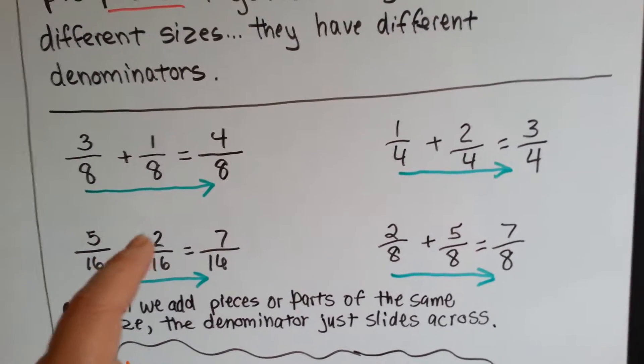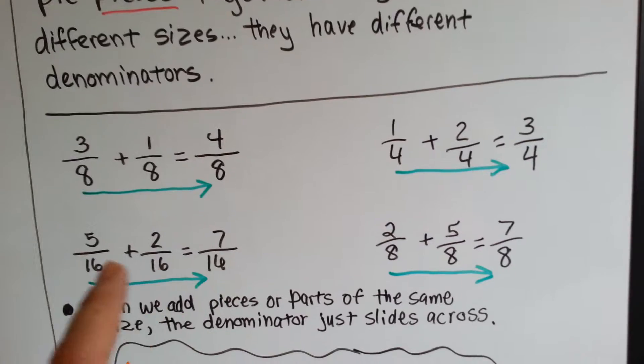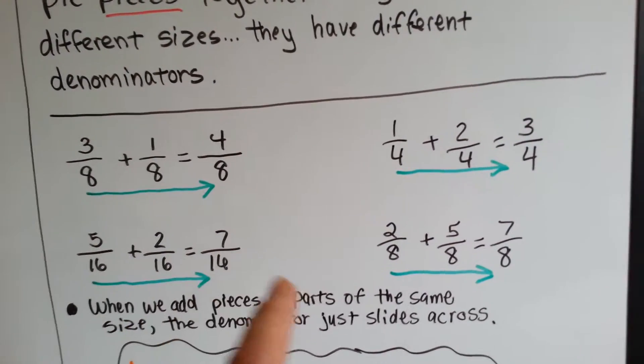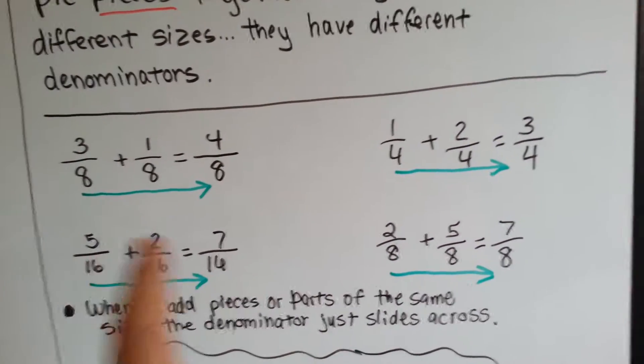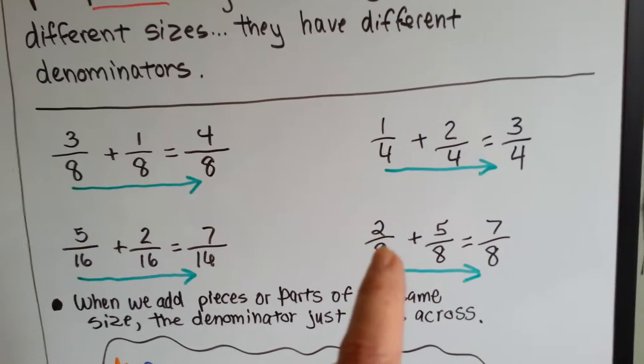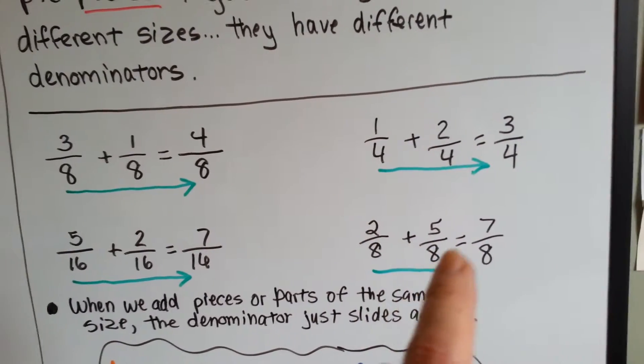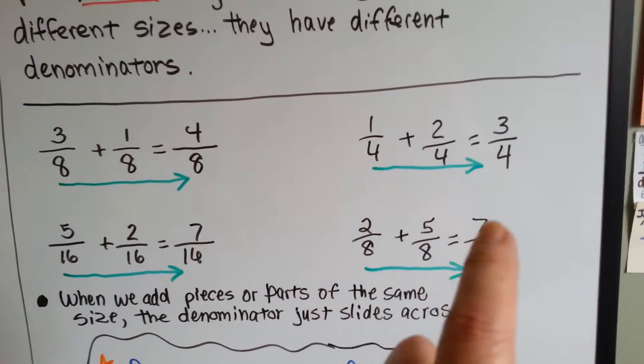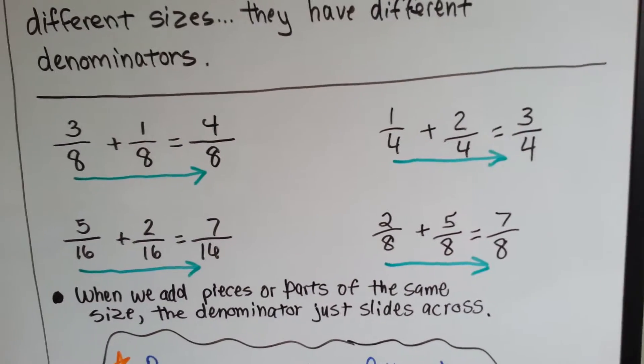Five-sixteenths plus two-sixteenths would be seven-sixteenths. We slide the denominator across and add the numerator. Two-eighths plus five-eighths is seven-eighths. We add the numerators and slide the denominator across.